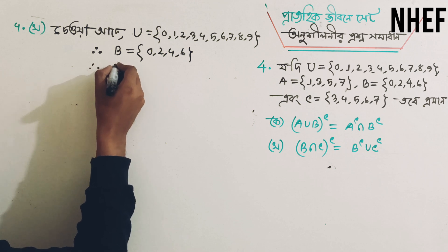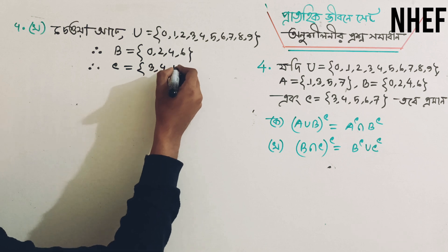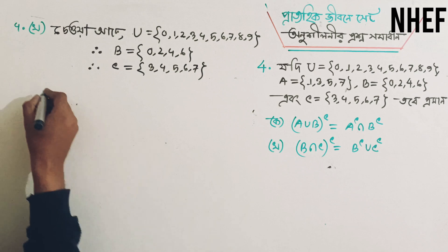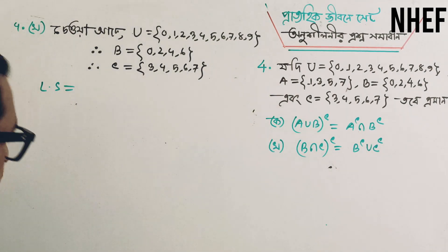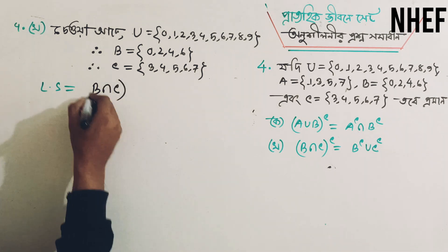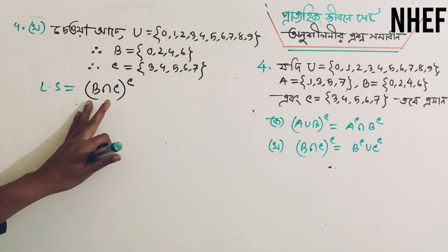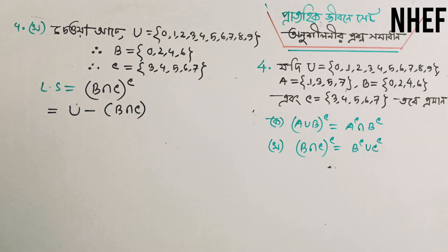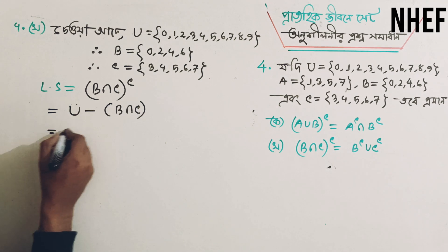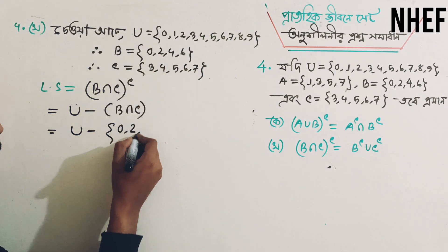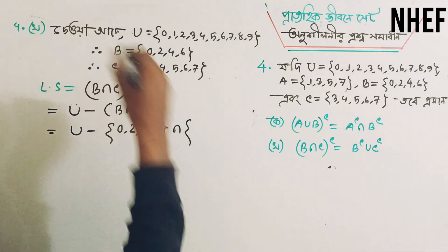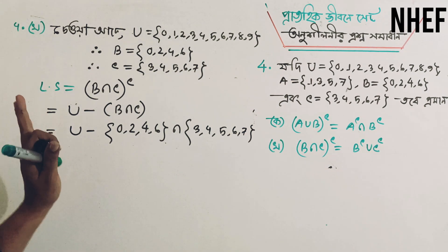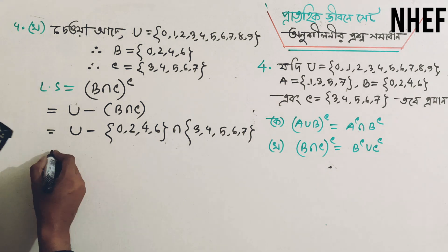If you have a set of values, then the value of C is 3, 4, 5, 6, 7. So I will give you 0, 3, 4, 7. That means you will have a set of values. So if you are working with values, then you will have 1, 2, 4, 6. If you compare it to 0, 2, 4, 6, 7 — no more. Here is the universal set.